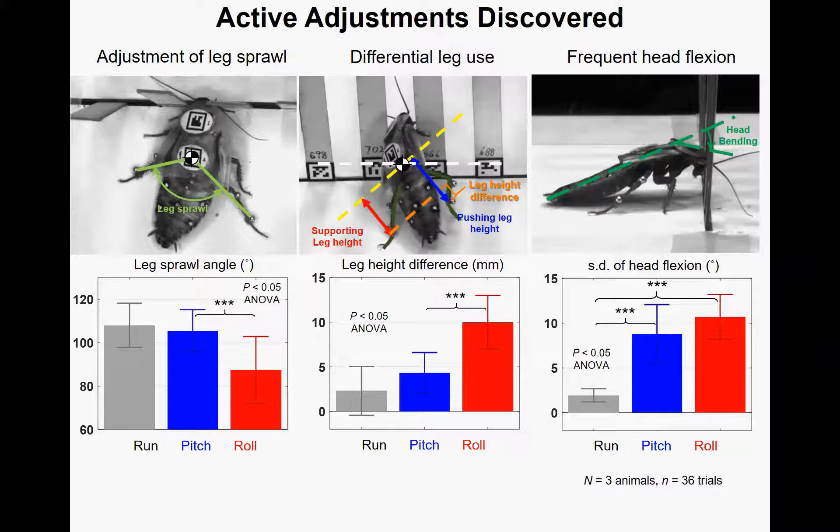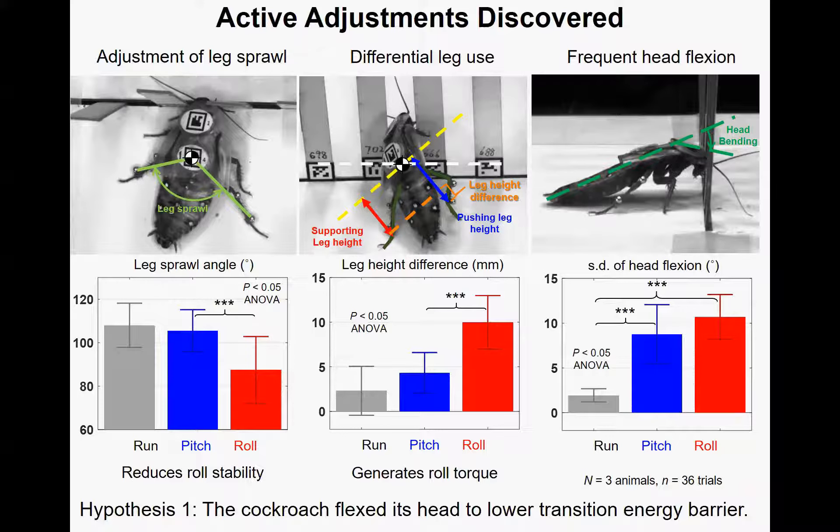These three observations support our hypothesis. Then to go further, we may ask for the mechanisms through which these adjustments would benefit the animal. For leg sprawl, we speculate that the animal might sprawl its leg inward to reduce stability. For differential leg use, we speculate that the animal might do so to generate roll torque. Both of these behaviors may help the animal roll and transition. But what about head flexing? How does active head flexing help the animal transition? We first hypothesize that the cockroach flexes its head to lower the transition energy barrier.